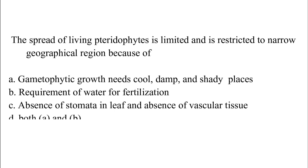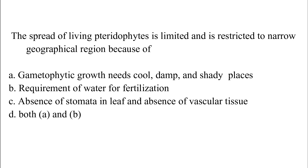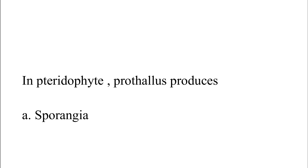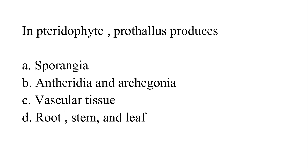The spread of pteridophytes is limited and restricted to narrow geographical regions because of: Option A: gametophyte growth needs cool, damp, and shaded places. Option B: requirement of water for fertilization. Option C: absence of stomata in leaves and vascular tissue. Option D: both A and B. The correct answer is Option D — both A and B. In pteridophytes, the prothallus produces Option A: sporangia, Option B: antheridia and archegonia, Option C: vascular tissue, Option D: root, stem and leaf. The correct answer is Option B — antheridia and archegonia.